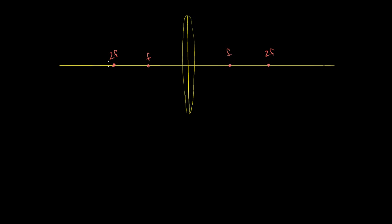Let's first put an object out here that's more than two focal lengths away from the lens. When we dealt with parabolic mirrors, we talked about the distance of two focal lengths being the center of curvature. Over here, we're just going to call it two focal lengths, because it's really not the center of curvature. So let's figure out what the image of this thing will look like as the light gets refracted through this lens.